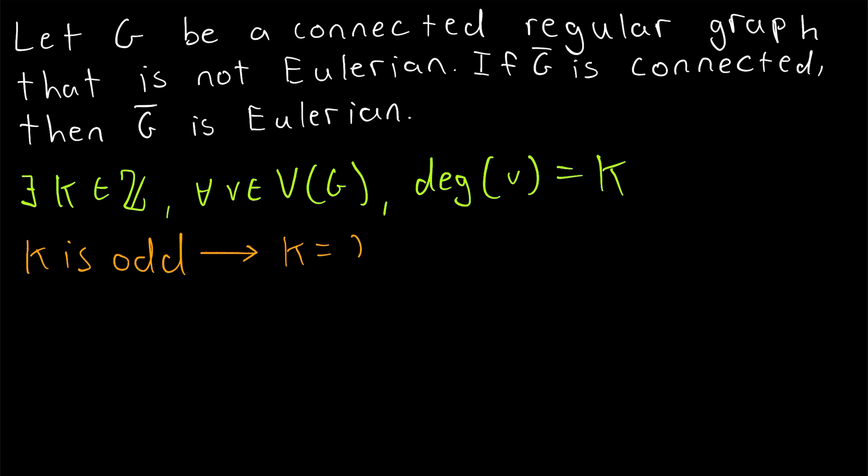So we can say that K is equal to 2J1 plus 1 for some integer J1. And again, that's because G is not Eulerian. So if all of its vertices did have an even degree, since it's also connected, it would be Eulerian, which is a contradiction. Which, again, uses the theorem I mentioned at the beginning of the lesson. So we can use that theorem to conclude that every vertex of a regular non-Eulerian graph must have an odd degree.